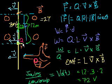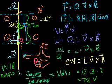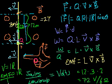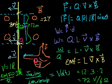Now you have that EMF of 72 volts across a 6-ohm resistor. So you go back to EMF equals I times R, which means current equals EMF divided by resistance. 72 volts divided by 6 ohms gives a current of 12 amperes flowing along this wire due to the EMF induced by the magnetic field.